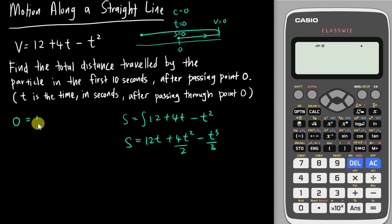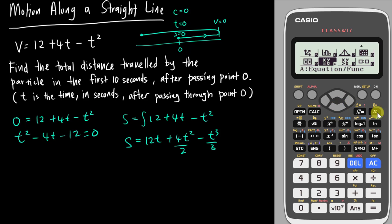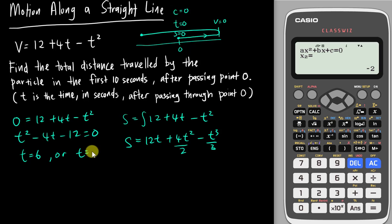Substituting v equals zero into the velocity equation gives: 0 equals 12 plus 4t minus t squared, which rearranges to t squared minus 4t minus 12 equals zero. Using the calculator's polynomial solver with degree 2, inserting a equals 1, b equals negative 4, c equals negative 12, I get t equals 6 and t equals negative 2. We reject the negative value since time cannot be negative, so the particle makes a U-turn at t equals 6 seconds.